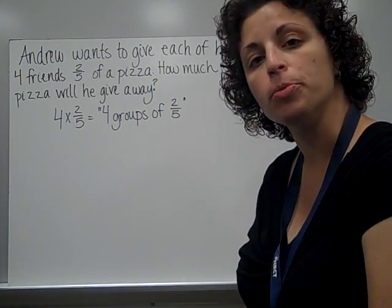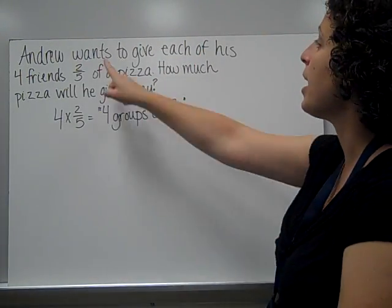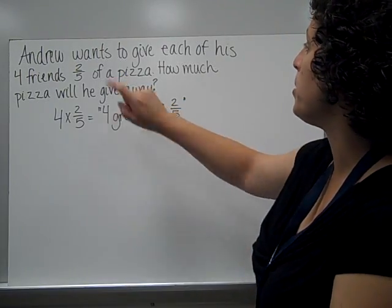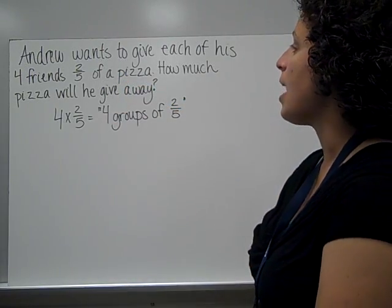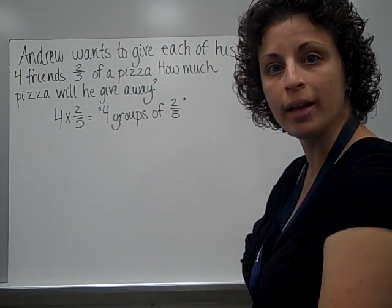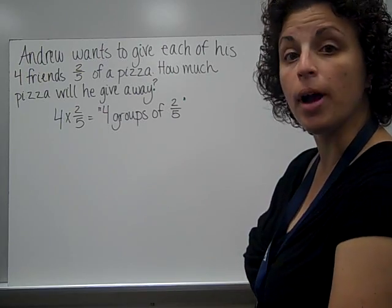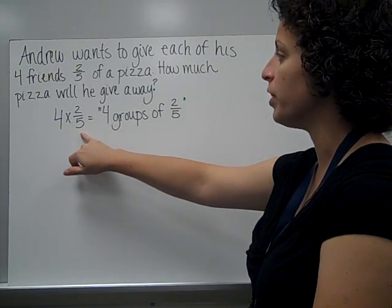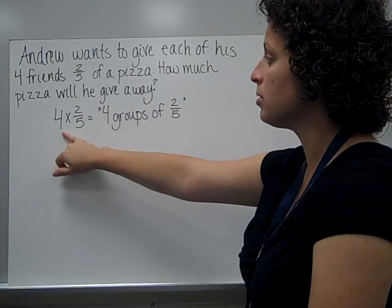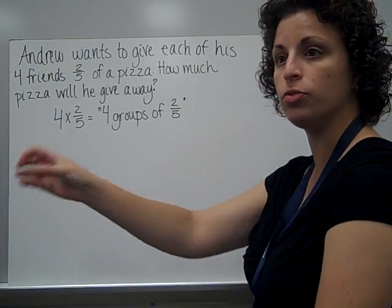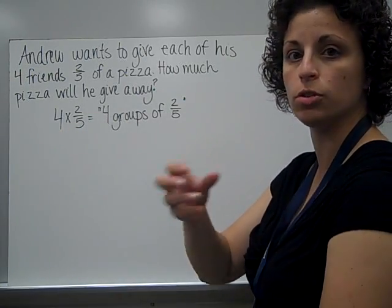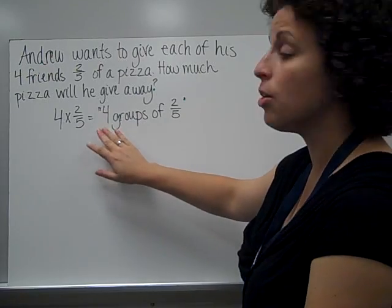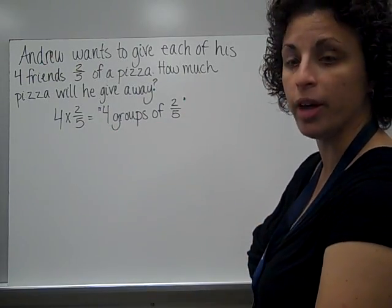Same thing, but in a word problem. Andrew wants to give each of his four friends 2 fifths of a pizza. How much pizza will he give away? Well, the problem I would need to solve would be 4 times 2 fifths, because four friends are each getting 2 fifths. So I'd give 2 fifths, 2 fifths, 2 fifths, 2 fifths — this is the same as 4 groups of 2 fifths.